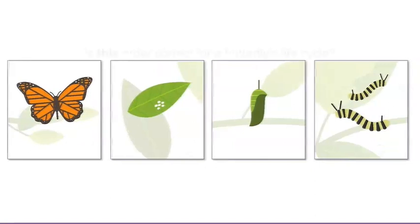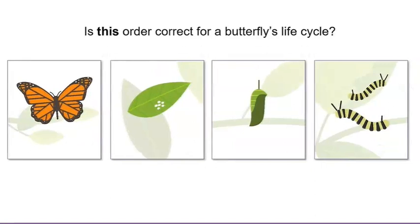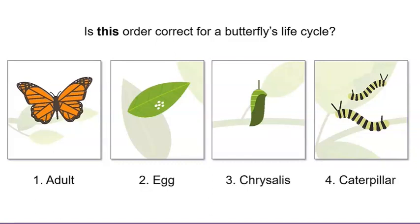Is this order correct for a butterfly's life cycle? Adult, egg, chrysalis, then caterpillar. Hmm, no, this order doesn't look right. However, I do think one of these cards is in the correct spot. Which card is in the correct spot?